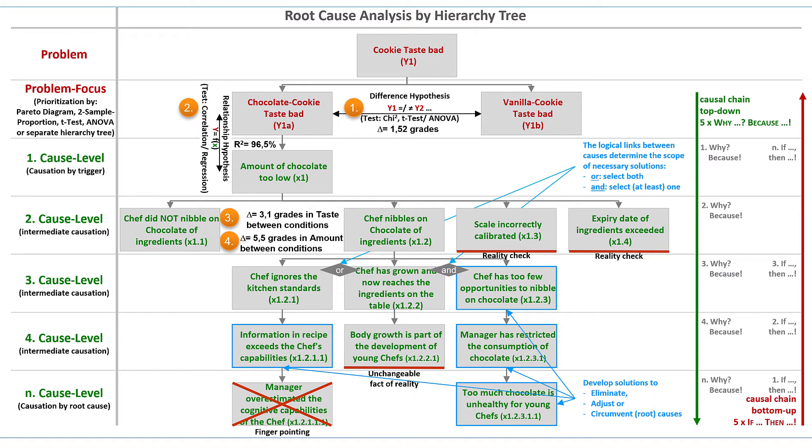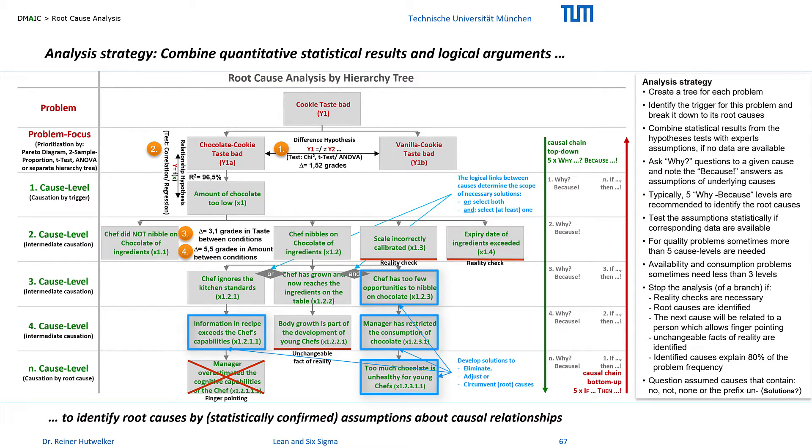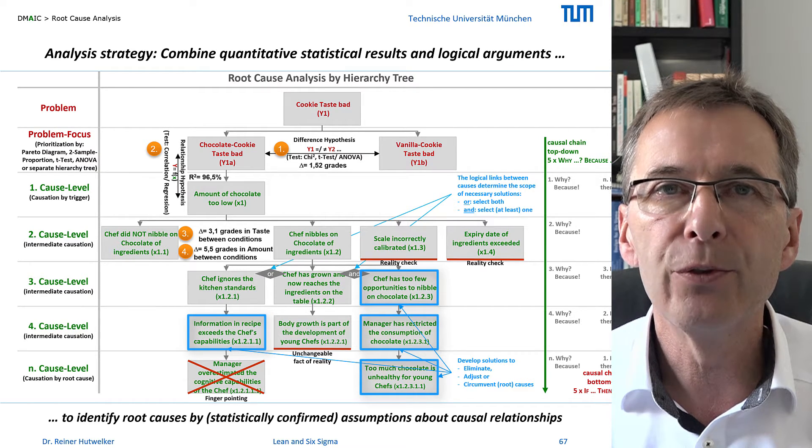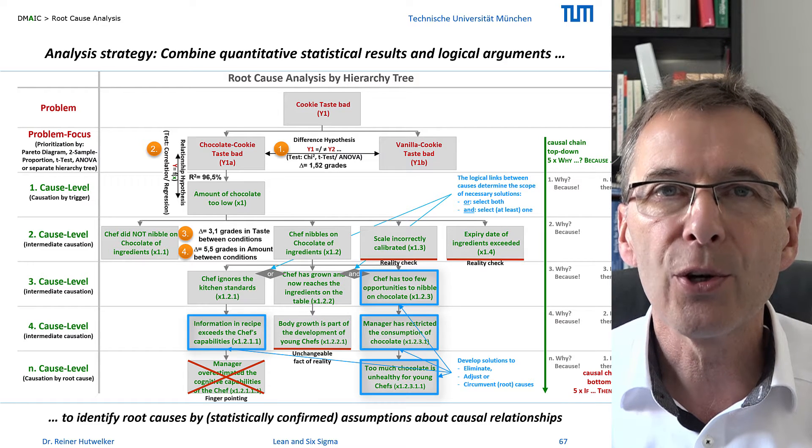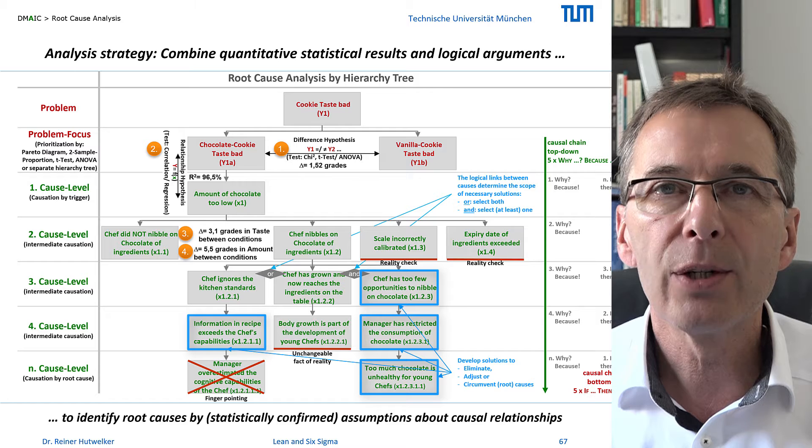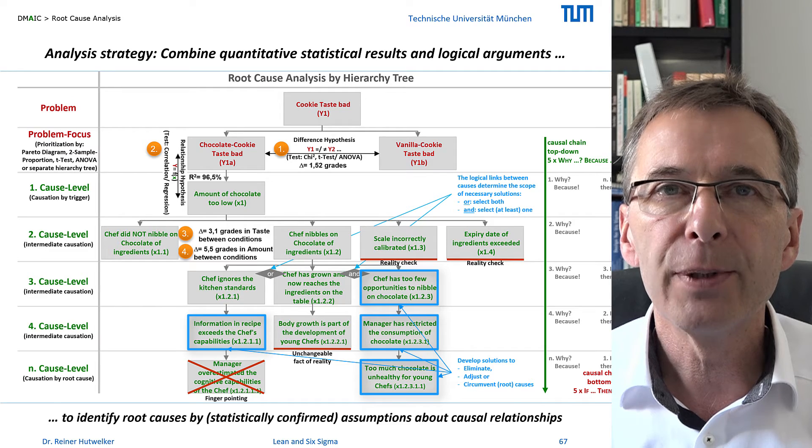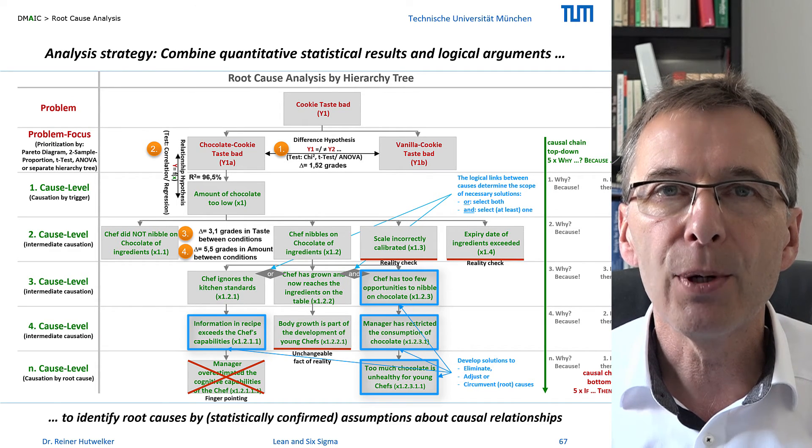When you have identified all the causes of a problem, mark them. Now you have fulfilled the purpose of the analyze phase for the first problem. You must now repeat this analysis for the other defined problems. And that can be very laborious. But maybe prioritizing the problems as described in the preparation and the resulting cross connections between the hierarchy trees will help you save time. The task in the following improve phase will be to eliminate, adjust or circumvent these root causes. And maybe you can win the experts in the workshop to additionally develop solutions right now. This involvement will assure acceptance and support for their implementation.